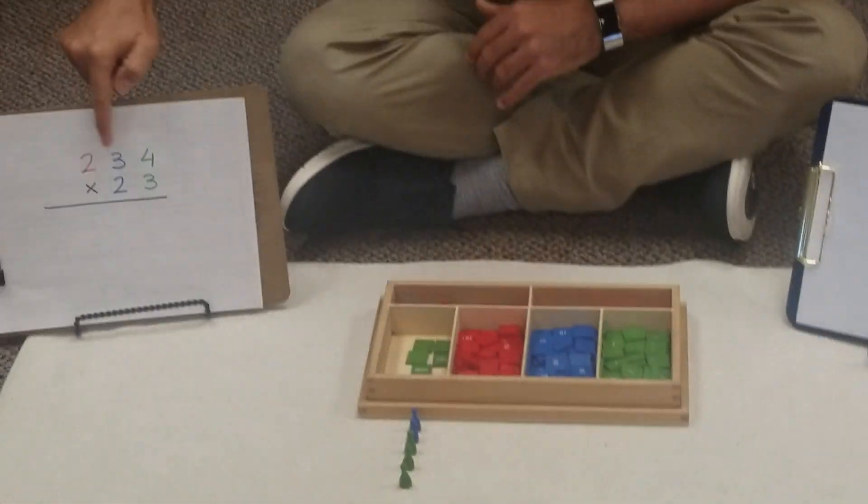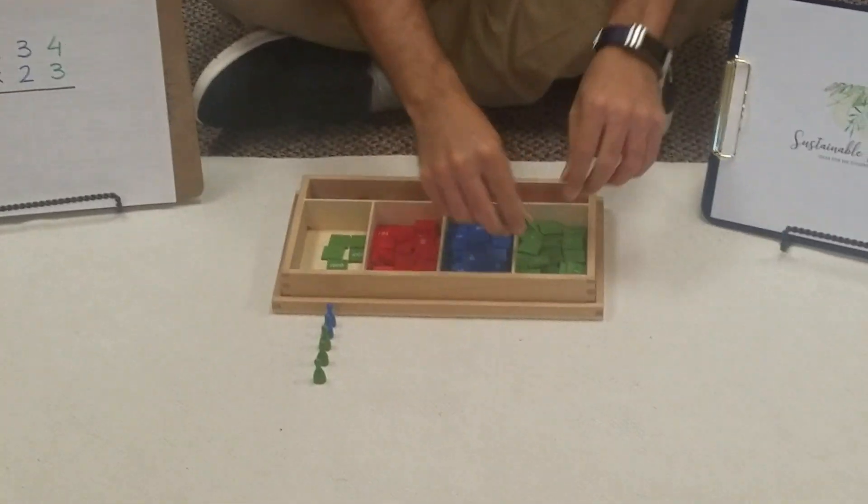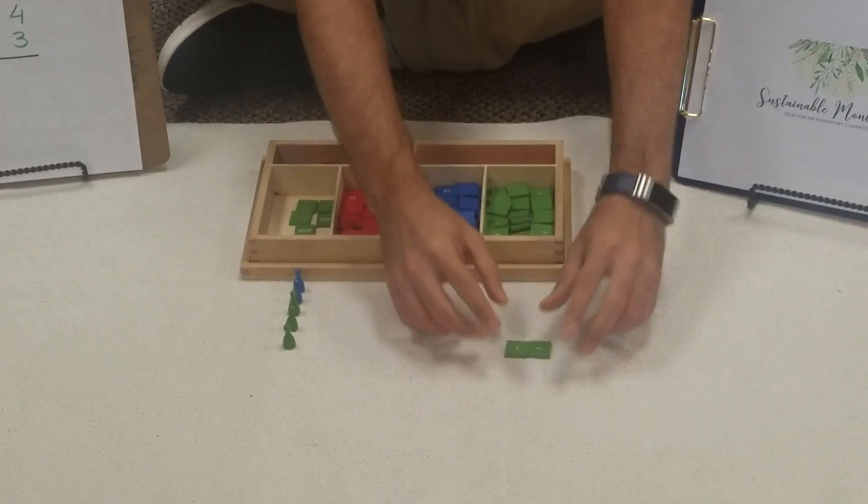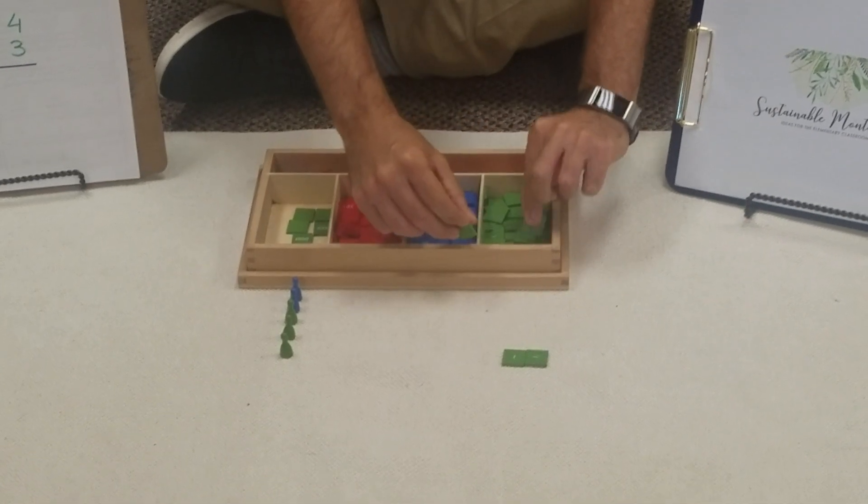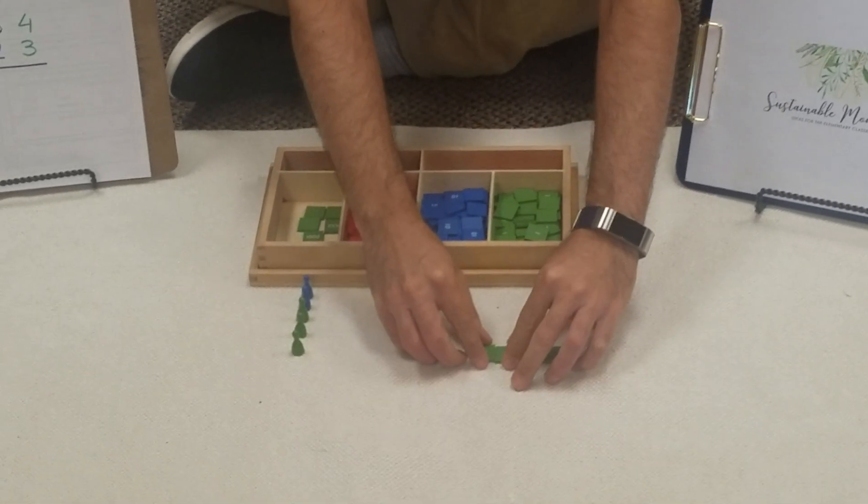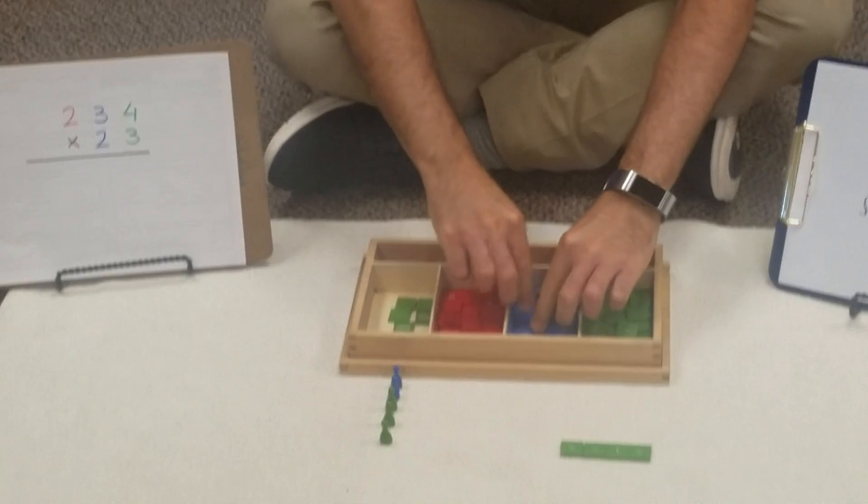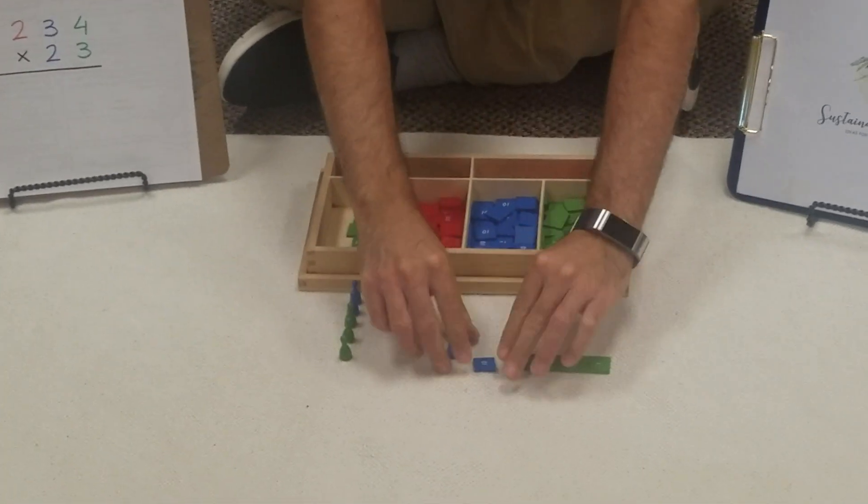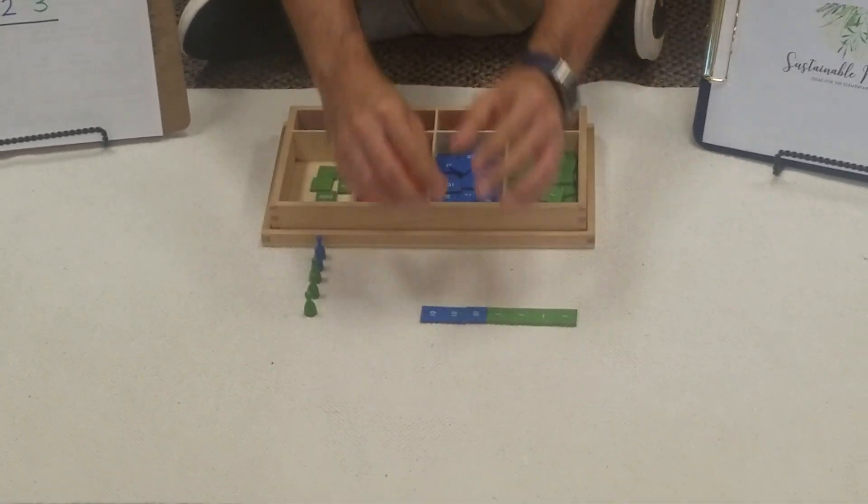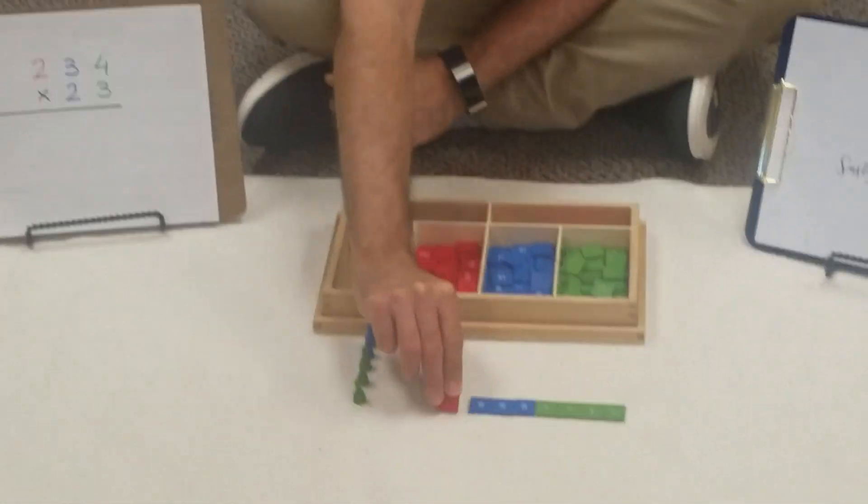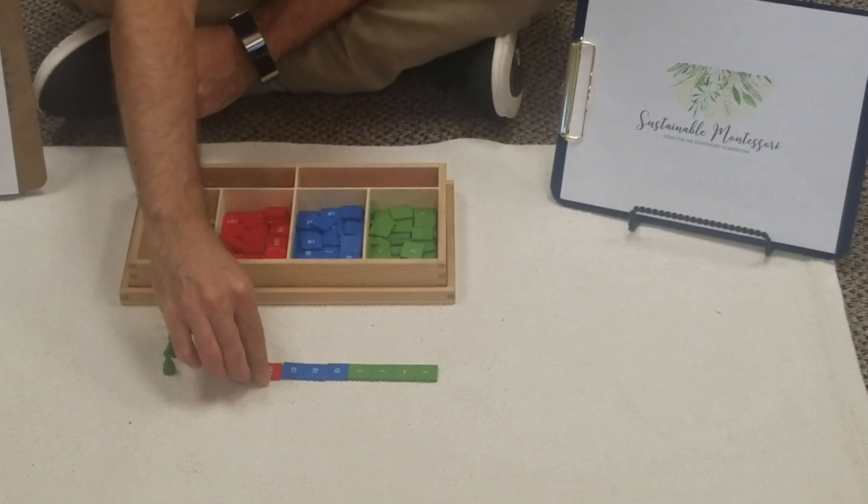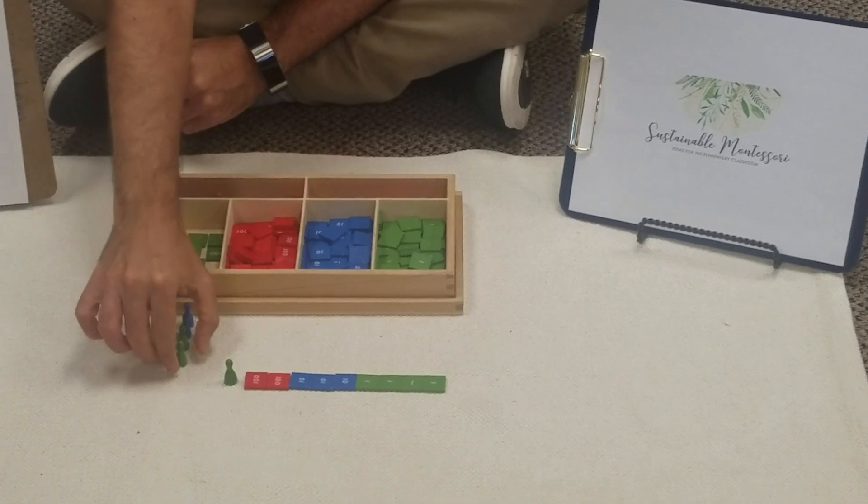So we're going to start with our number. The multiplicand is we have 4 units. 1, 2, 3 and 4 units. Then we have 3 tens. And 2 hundreds. And that's what each unit is bringing.